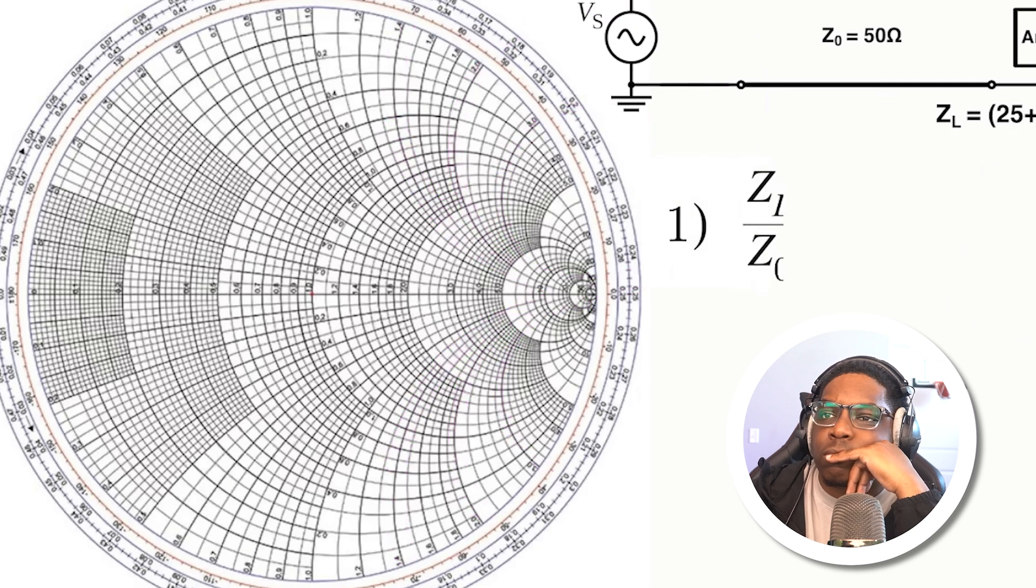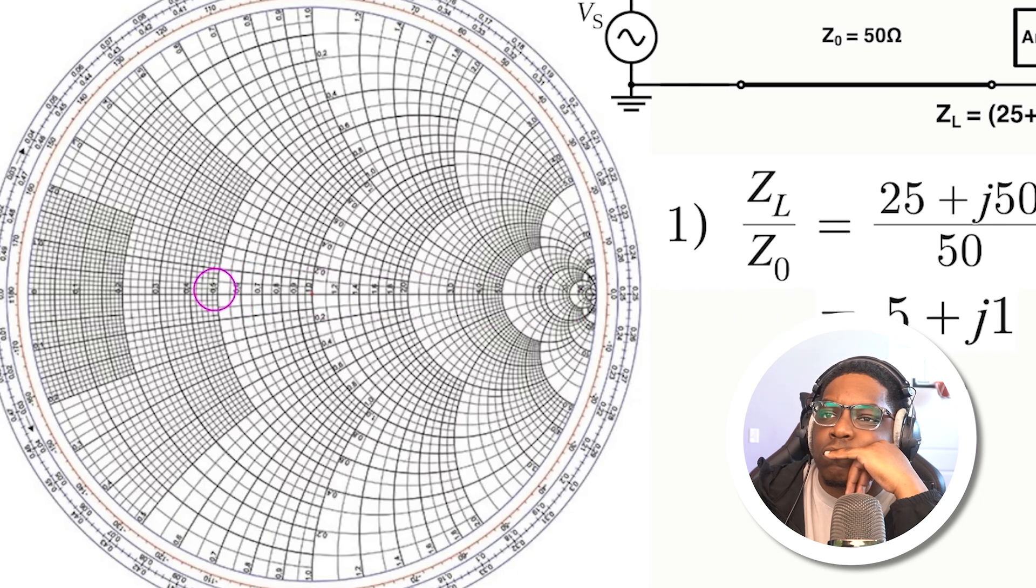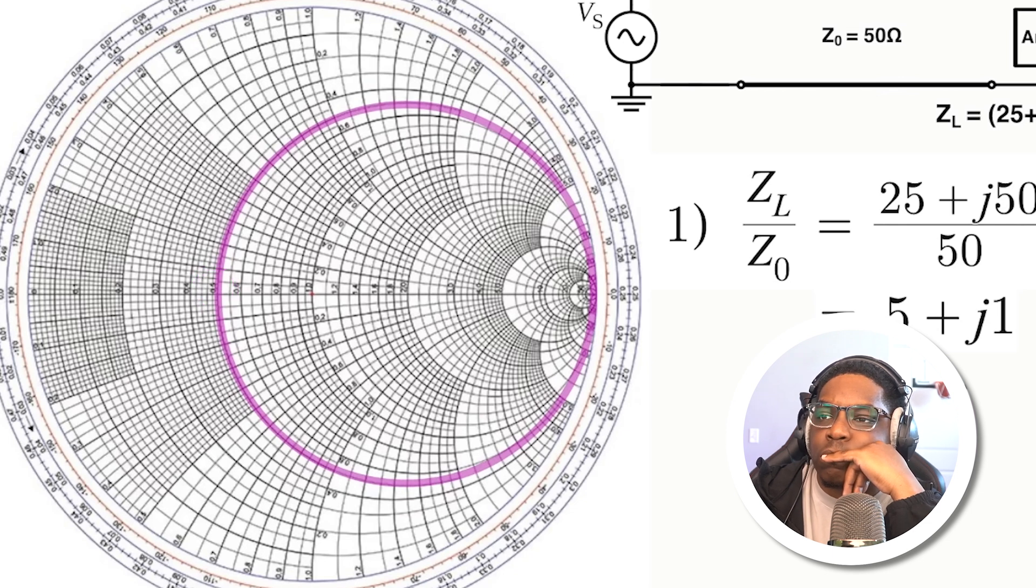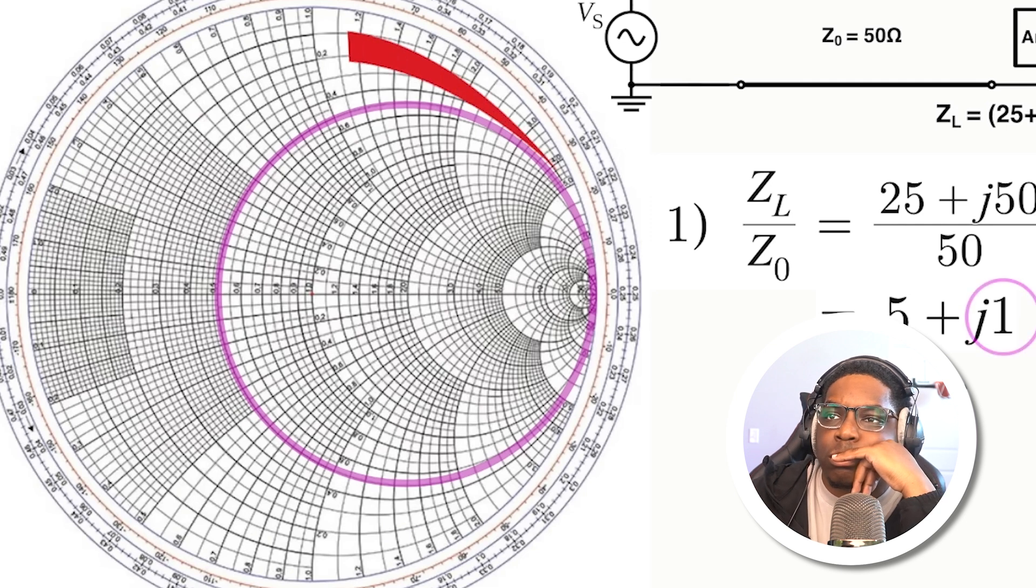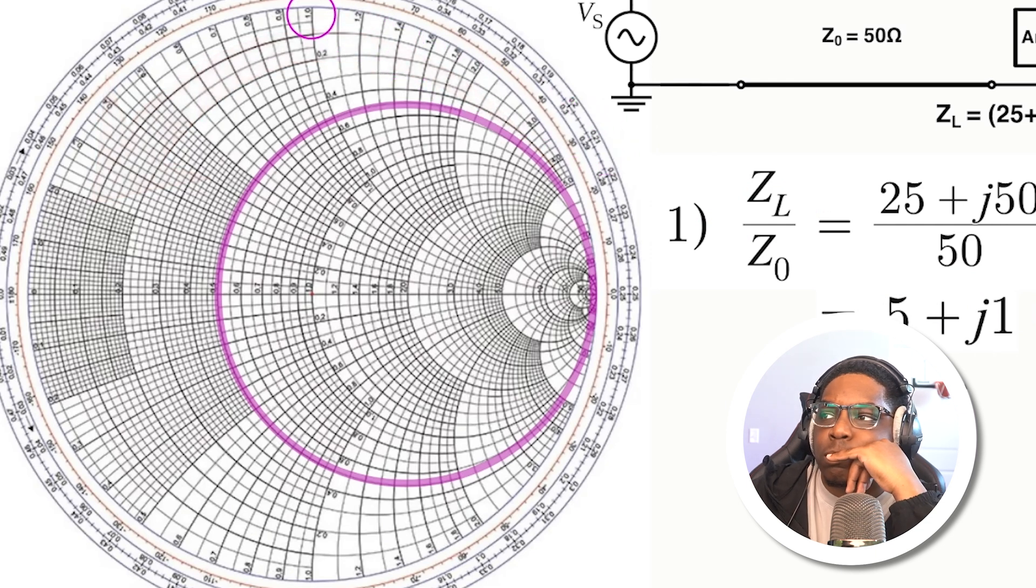Step one with the Smith chart is to take your load impedance and divide it by the transmission line impedance. Then you take the real part of that and find that value on the horizontal axis. Hard to read, but 0.5 is right here, which is on this circle, which we're going to highlight. These circles are all of constant normalized resistance that all correspond to the real component. Then for the imaginary part, you find that value out here along the perimeter of the Smith chart. In our case, positive one can be found right here. The top is all positive values, a.k.a. inductive. We'll then highlight that associated circle of constant reactants. Then the intersection point of those two circles is going to tell us how much of our wave will reflect back from the antenna.